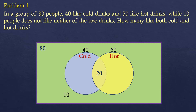Let's fill in everything that must be in the circles. For those who like cold drinks only, that's 40 minus 20, which is 20 who like only cold drinks, plus the 20 who like both cold and hot — making 40 total. For hot drinks, 50 minus 20 is 30 who like hot drinks only, plus 20 who like both, making 50 total. So the answer to how many like both cold and hot drinks is 20.